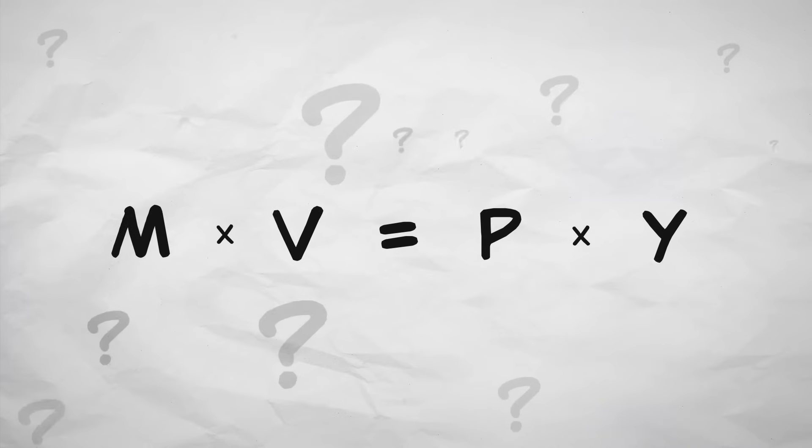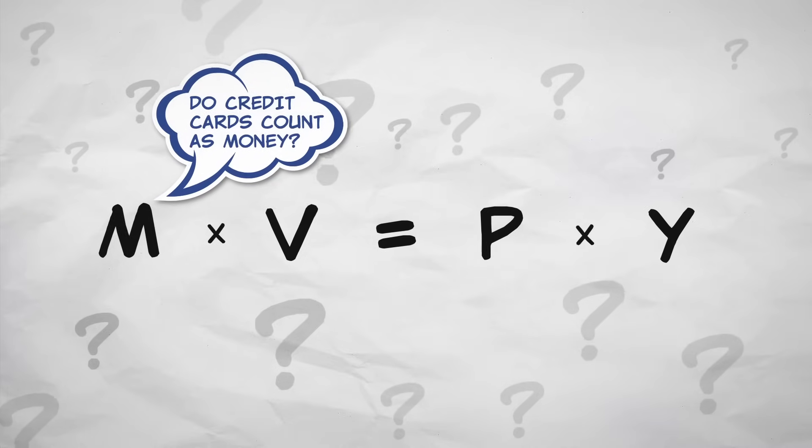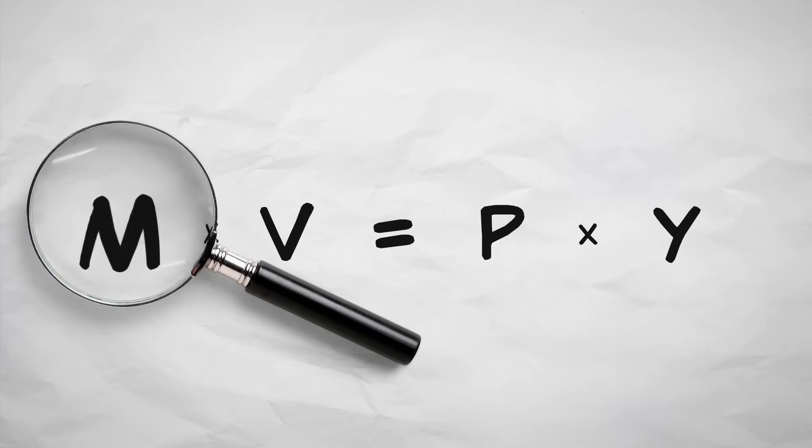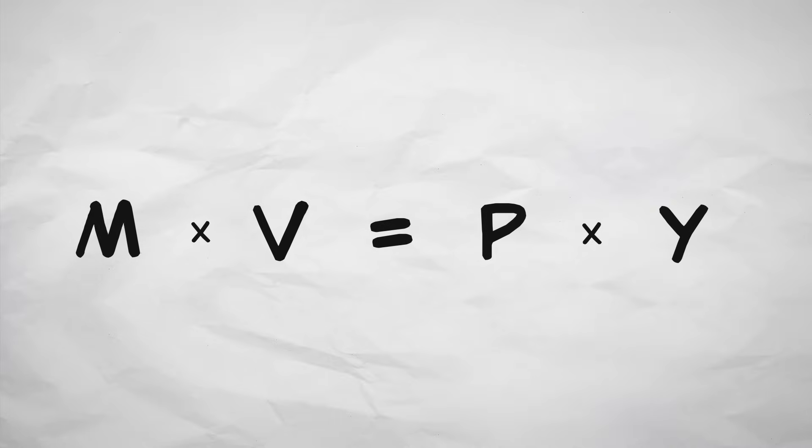There are important questions about the variables and how they are measured. How do we measure M, for example? However, the core identity that M times V must equal P times Y gives us a lot of insight and a way of organizing our thought about important macroeconomic issues. So, we'll return to this tool often.